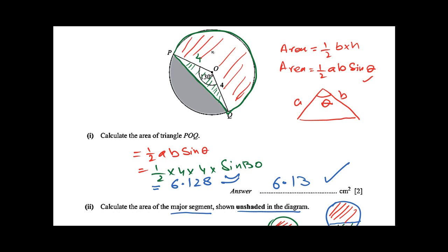One is a triangle and one is a sector. Area of triangle we have already calculated: 6.128 cm².